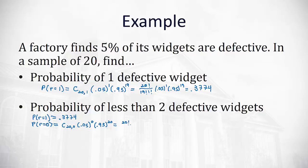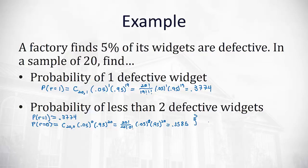Combination 20 choose 0 is 20 factorial divided by 20 factorial times 0 factorial, which simplifies to 1, times 0.05 to the zero power, times 0.95 to the 20th power. When we do that on the calculator, we get 0.3585. So the probability of less than two is 0.3774 plus 0.3585, giving a total probability of 0.7359.